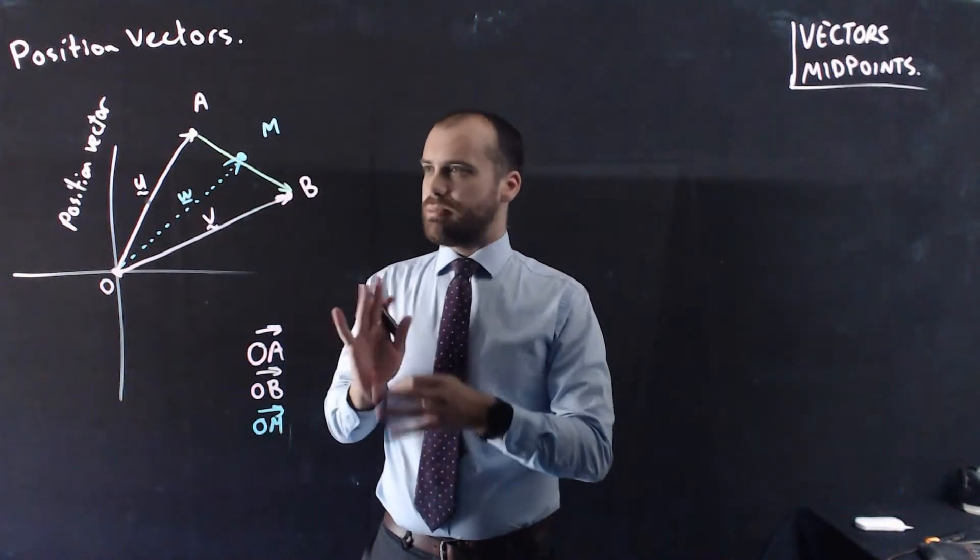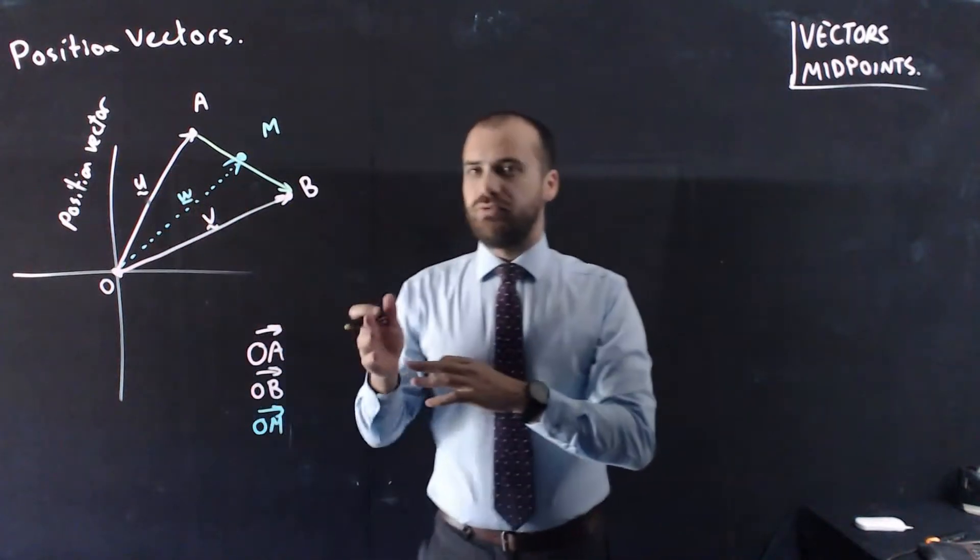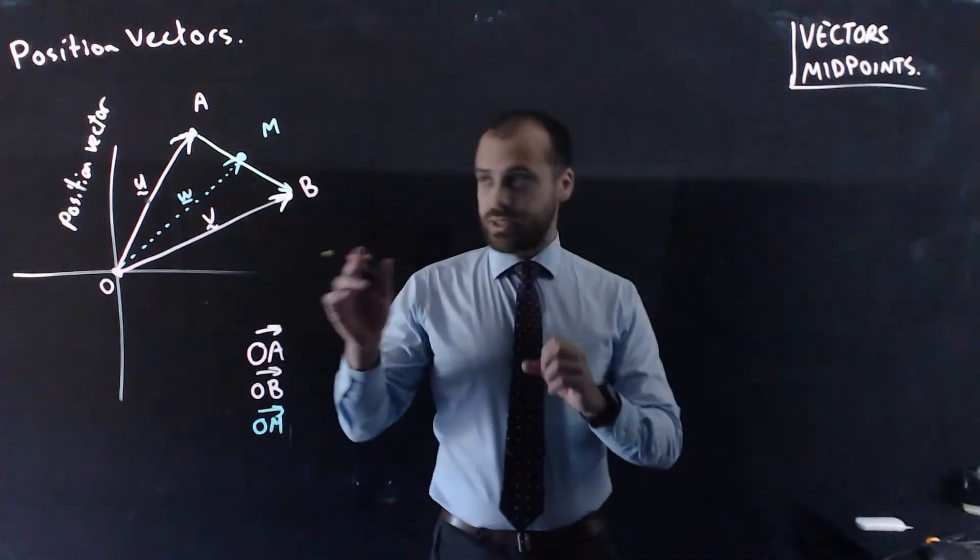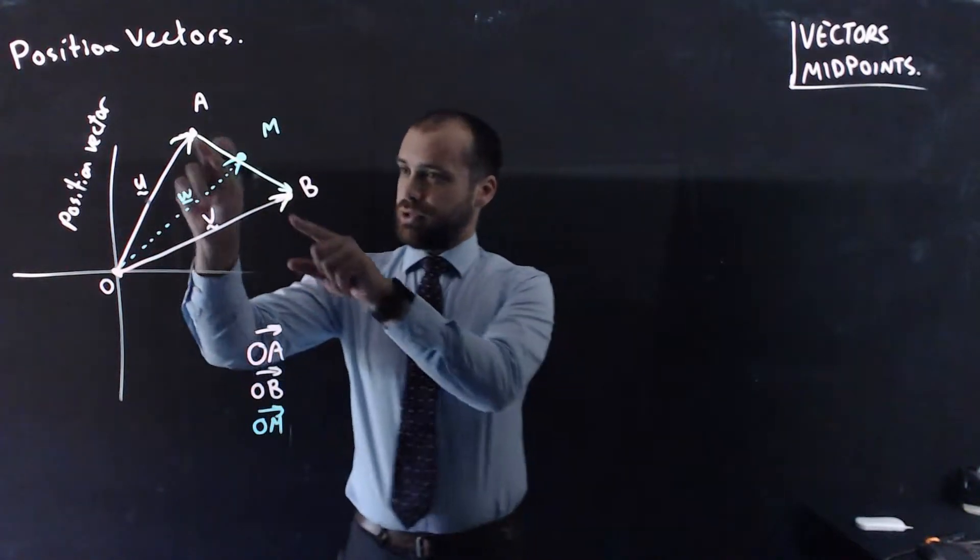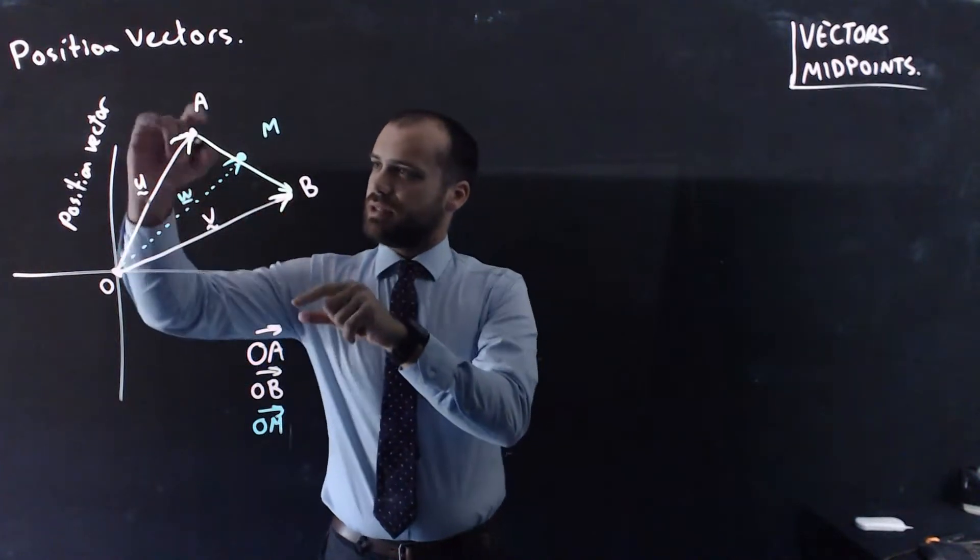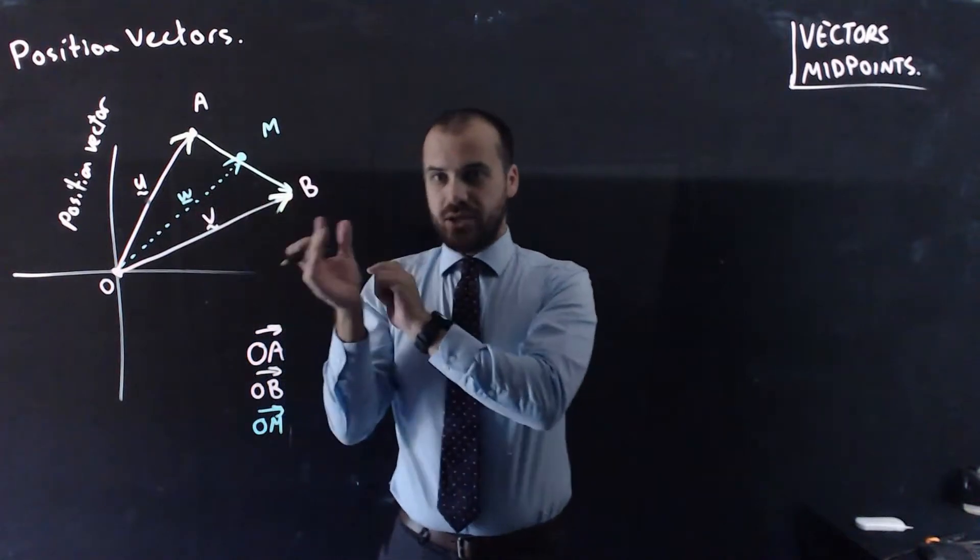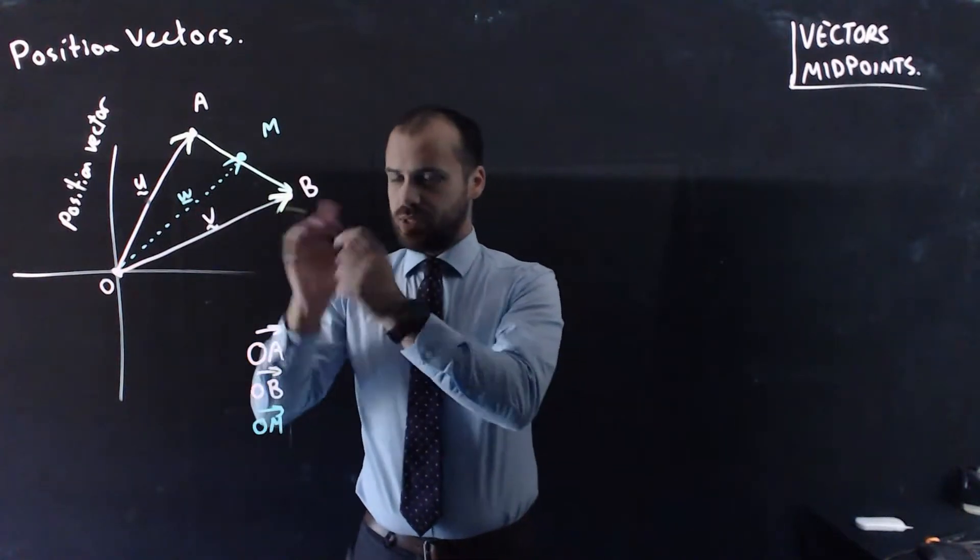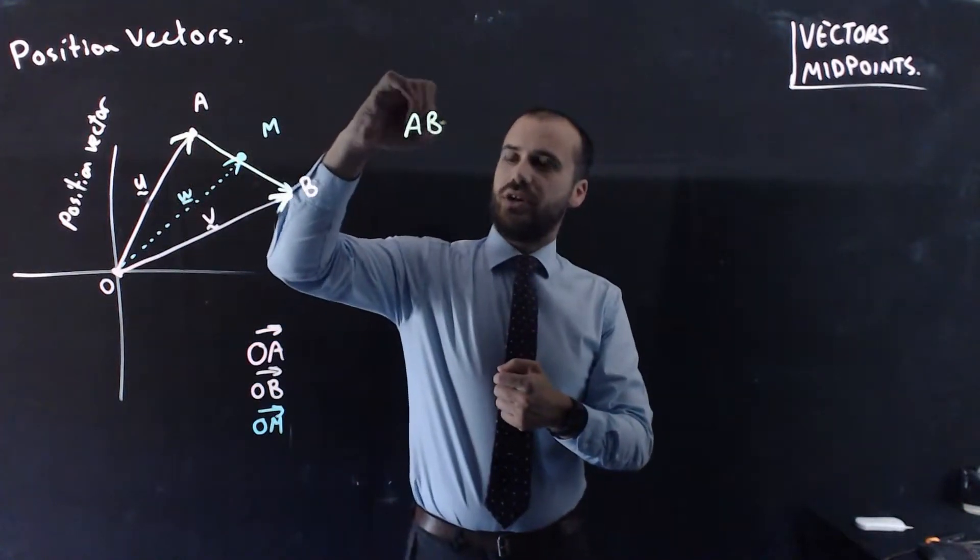Now, how do we find AB? Well, we need to somehow add U and V together to make AB. Now, it's tempting here to just add that vector to that vector, but you can see that there's an arrow here and an arrow here. And that's not how you add vectors. You have to add the tip to the tail. So, to find vector AB, which is the one I'm trying to find...